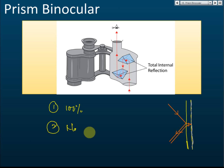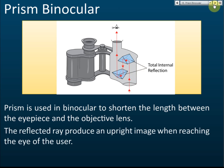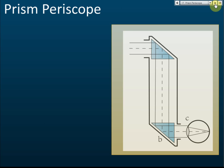That's why we use total internal reflection — no double image. These are the advantages of using total internal reflection over mirrors. In a binocular, prisms are used to shorten the length between the eyepiece and the objective lens. The reflected rays produce an upright image when reaching the eye of the user. With a normal telescope you get an inverted image, but after reflection you get an upright image.